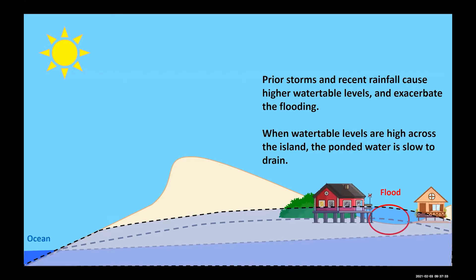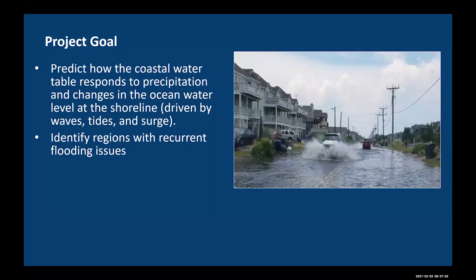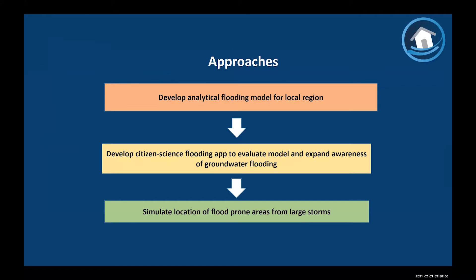If the water table has already been elevated by a prior storm, you can also see extended durations of flooding from surface ponding. The goal of this project has been to predict those responses to changes in the coastal water table driven by both surge processes and rainfall, and identify regions across the Outer Banks with recurrent flooding issues. We took a three-stage approach: first, develop an analytical flooding model; second, develop a citizen science flooding app to evaluate model performance; and third, simulate areas likely to see groundwater flooding.